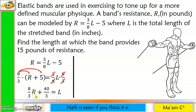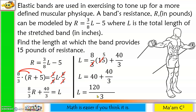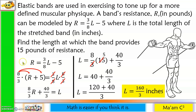Let me switch their positions and substitute 15 for R. So L is equal to 8/3 times 15, plus 40/3. 15 and 3 can be simplified, so this will just be 5. 8 times 5 is 40, so we have 40 plus 40/3. The LCD is 3: 3 divided by 1 is 3 times 40 is 120, plus 40 gives 160. So we have 160/3 inches — that is the length when R is 15 pounds.